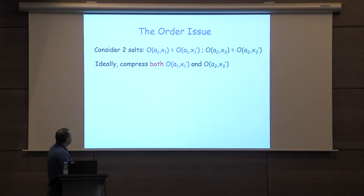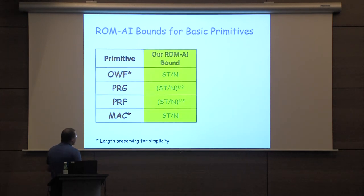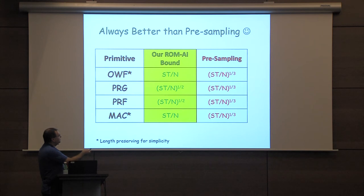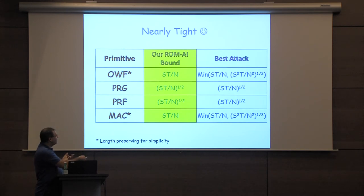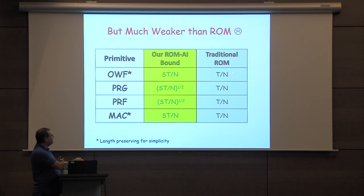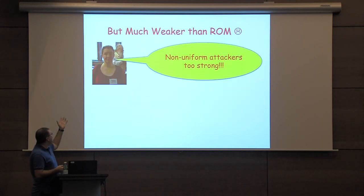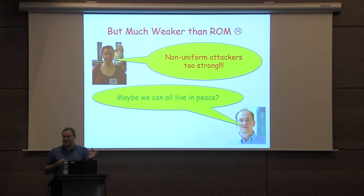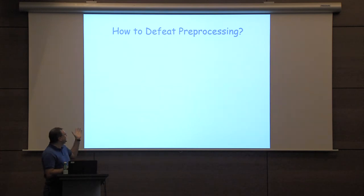It turns out there are some technical issues to solve. We apply the compression technique to many fundamental primitives and get concrete bounds. These bounds are always better than pre-sampling and actually nearly tight — there are some small gaps but they nearly match the existing attacks. So now we can actually apply the random oracle with auxiliary input methodology to get concrete bounds. Of course, as I told you, they're considerably weaker than the best attacks in the standard model. So maybe practitioners will say, non-uniform attackers are too weak — we've been telling you all along. But salting is the answer: we choose a random public salt after pre-processing, with the hope that the attacker didn't know the salt in advance.